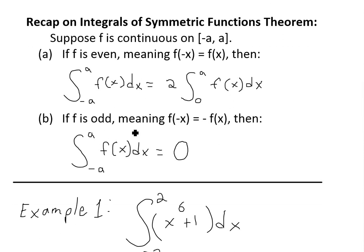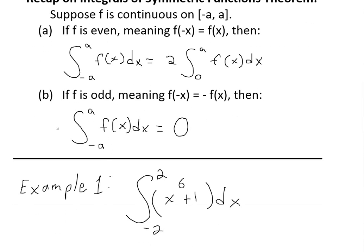But if f is odd, meaning that f of negative x equals negative f of x, then basically the integral from negative a to a of f of x equals 0, and this just cancels out. So make sure to watch that video on the link below to get a better idea of this.